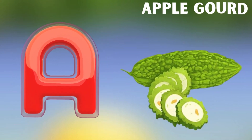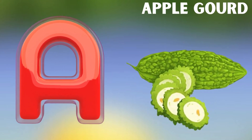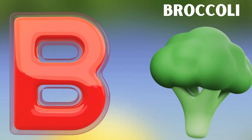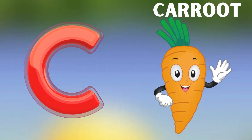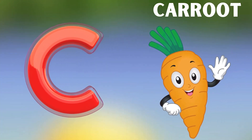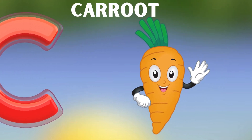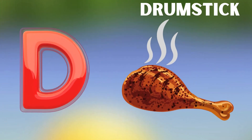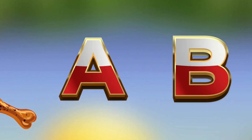A is for apple gourd, apple gourd. B is for broccoli, broccoli. C is for carrot, carrot. D is for drumstick, drumstick.